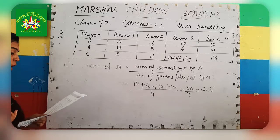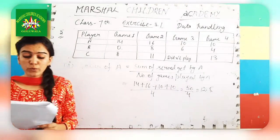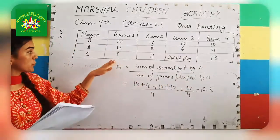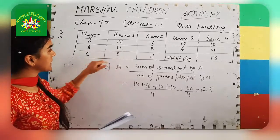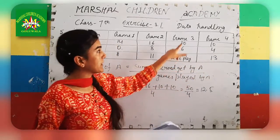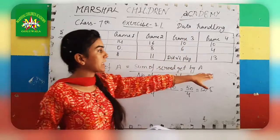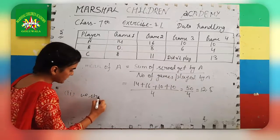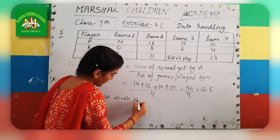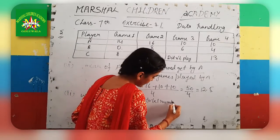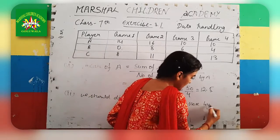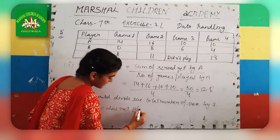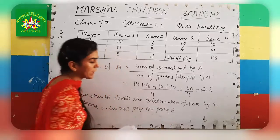Now the second part: we have to find the mean number of points per game for player C. Would you divide the total points by 3 or by 4? C played games 1, 2, and 4 — they did not play the 3rd game. So we should divide by 3, not 4, because the 3rd game was not played by C.